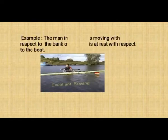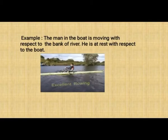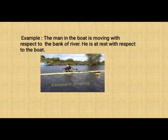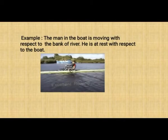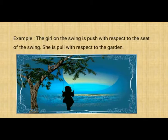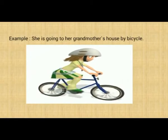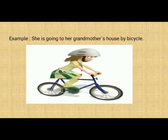The first example: the man in the boat is moving with respect to the bank of the river, but he is at rest with respect to the boat. The second example: the girl on the swing is moving with respect to the seat of the swing. The third example: the girl on the bicycle is moving with respect to the road.